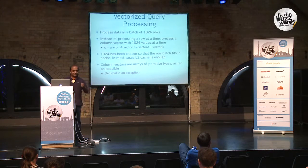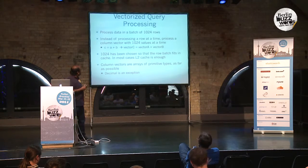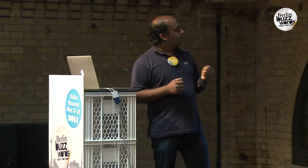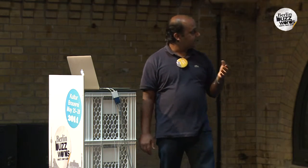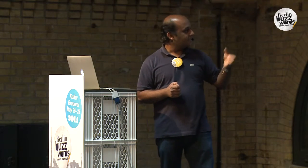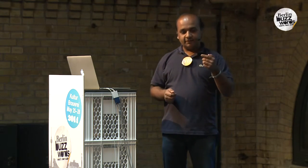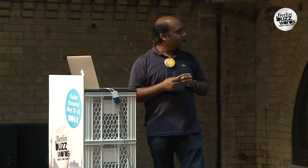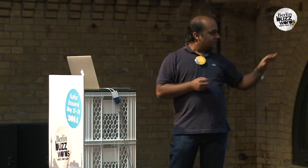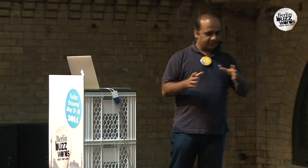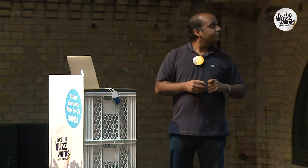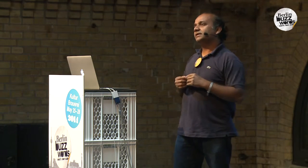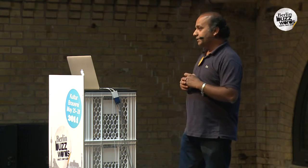Some people confuse vectorization with meaning it uses vectorized CPU instructions. Unfortunately, being in the Java world, we don't have those benefits yet. Another key thing about this design is that column vectors should be arrays of primitive types as much as possible. This works very well for integer types or double types. Even for strings it is possible — we can buffer strings into a single byte array and have a start and length vector separately. For decimal, which is a more complicated data type, Hive used to use Java BigDecimal, but we implemented our own new class for decimal computation.